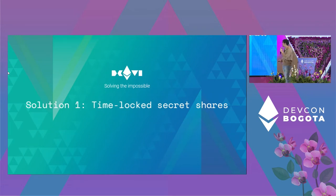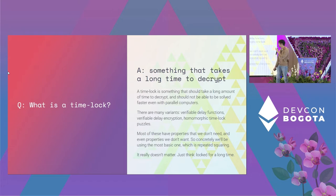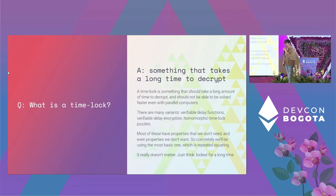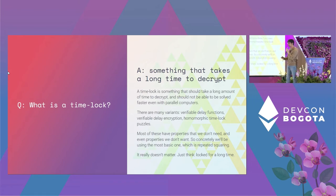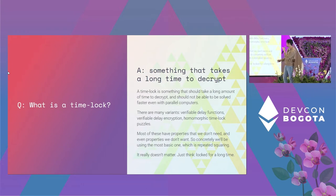First, what is a time-lock? It's basically something that takes a long time to decrypt. There are multiple variants — if you've been following the merge, they use verifiable delay functions — but we're going to use the most basic one: repeated squaring. Realistically it doesn't matter which you use; just think of it as locked for a long time. That's what matters.